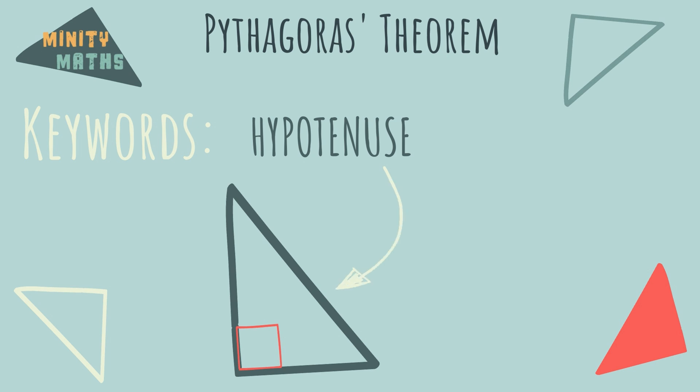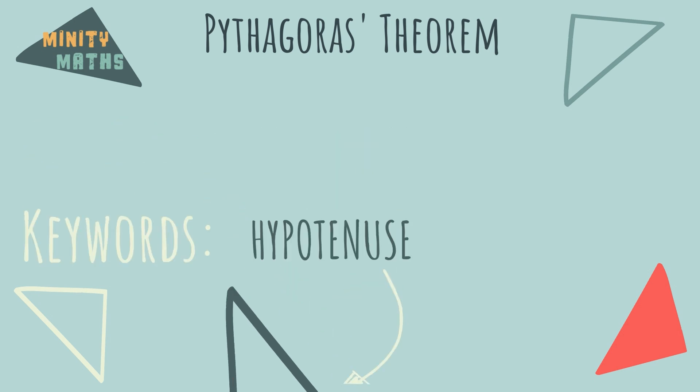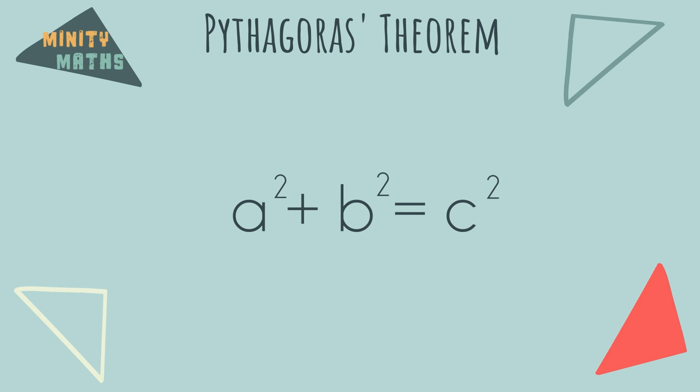Knowing which side is the hypotenuse is crucial when using the formula for Pythagoras's theorem. So let's have a look at the formula. It reads as a squared plus b squared equals c squared.